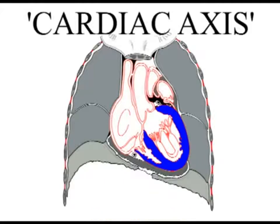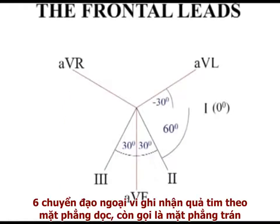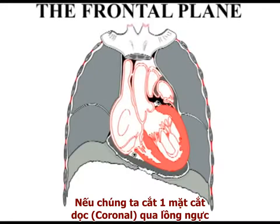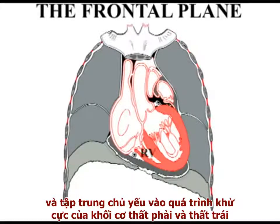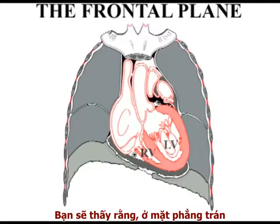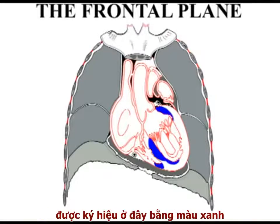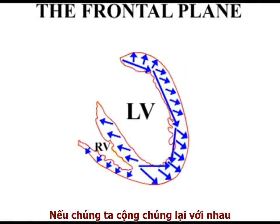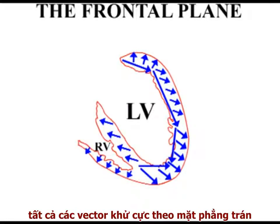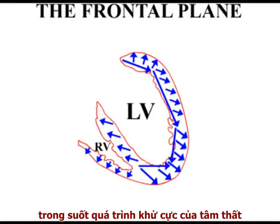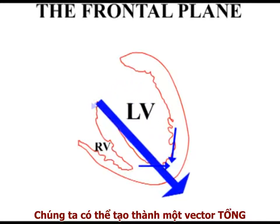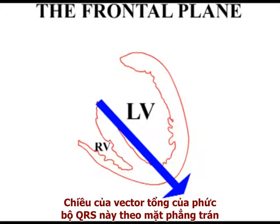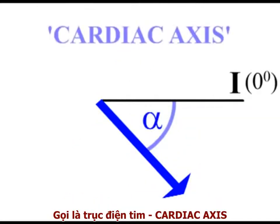So what is the cardiac axis? You will remember from section 1 that the six frontal leads examine the heart in the vertical or frontal plane. If we take a coronal section through the chest cavity and focus on depolarization events in the main muscle mass of the right and left ventricles, you will see that in the frontal plane, depolarizing forces of differing magnitudes — seen here in blue — are moving through the chambers in many different directions during normal ventricular depolarization. If we add together all of the depolarization vectors occurring in the frontal plane throughout the duration of ventricular depolarization, we can generate an overall vector with a magnitude and direction. The direction of this total frontal QRS vector, defined by the angle it makes with lead 1, is the cardiac axis.